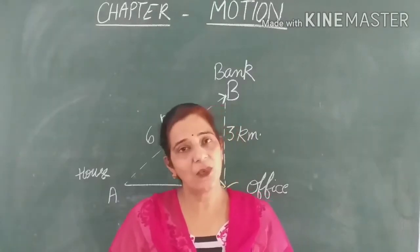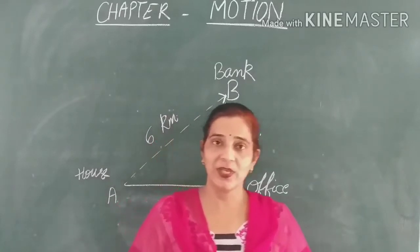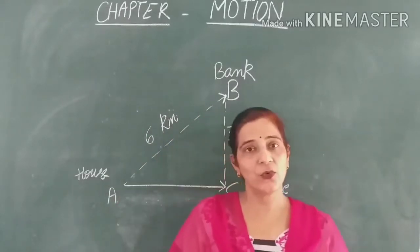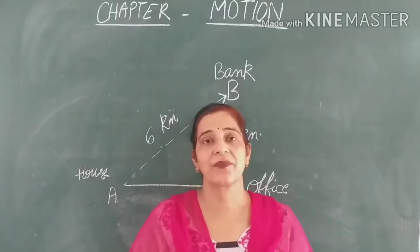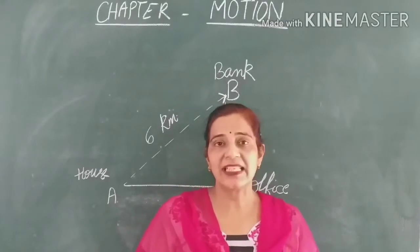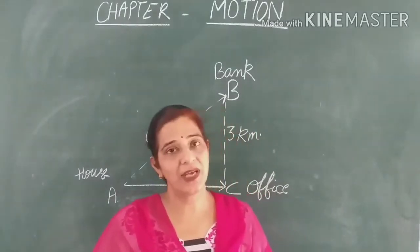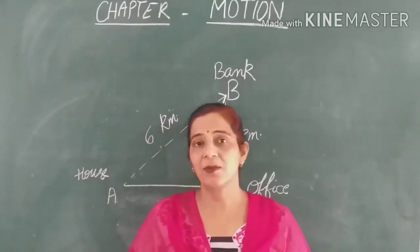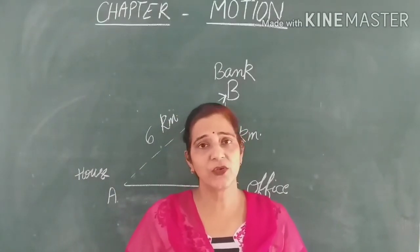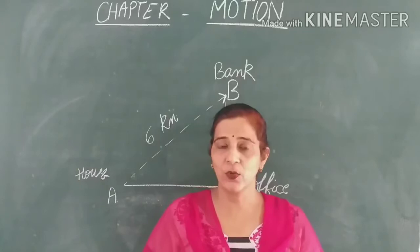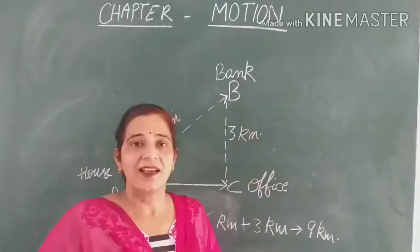Now to study more about motion and moving objects, we should know the meaning of two main words: distance and displacement. Distance is the actual length of the path which is covered by a moving object, irrespective of the direction in which it is moving. That is known as distance.